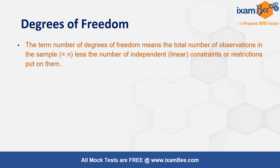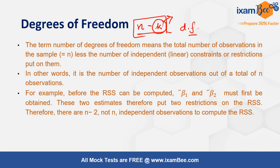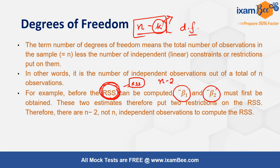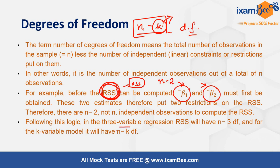To formally define degrees of freedom: it is the total number of observations (n) minus the number of independent linear constraints or restrictions placed on them. If there are k restrictions, then n minus k is the degrees of freedom. In econometrics, for a simple linear regression with an intercept term, you estimate two parameters — beta-1-hat and beta-2-hat — so the degrees of freedom for the residual sum of squares is n minus 2. The general formula is n minus k.